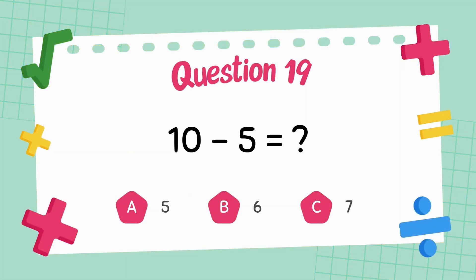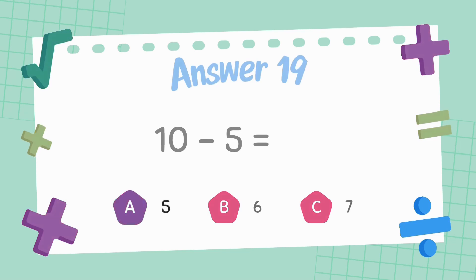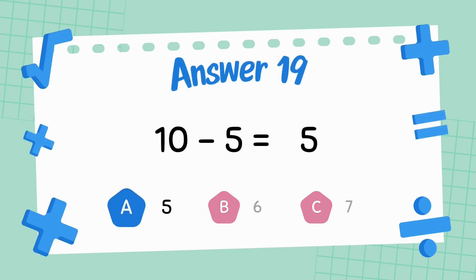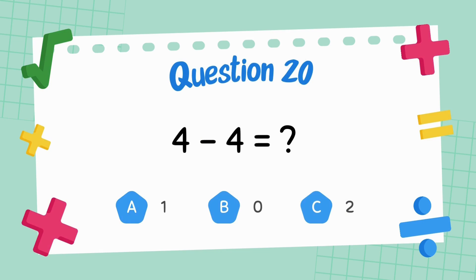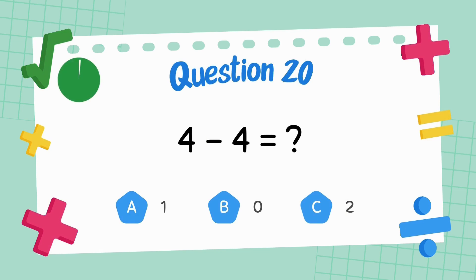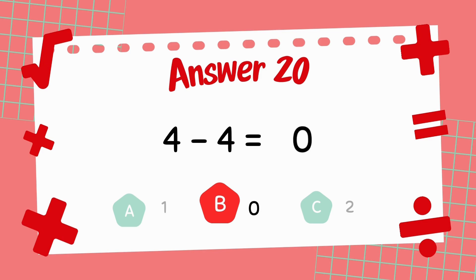What is 10 minus 5? The answer is 5. What is 4 minus 4? The answer is zero.